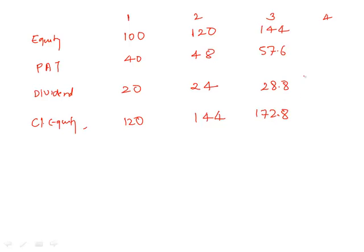172.8 into 40 percent, 69.12. Half of 69.12, 34.56. Then 172.8 plus 34.56, 207.36. So now this is data of a company for four years.